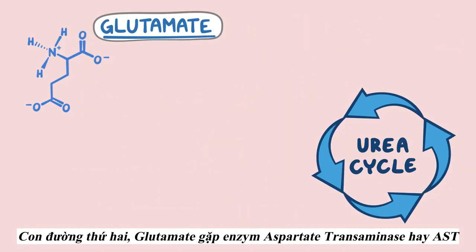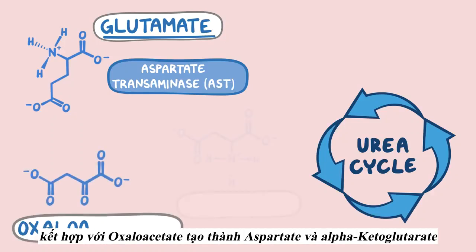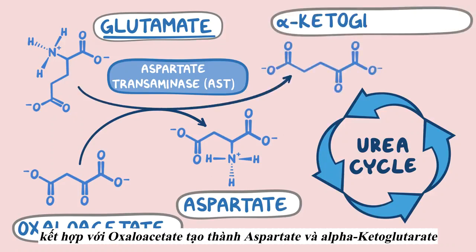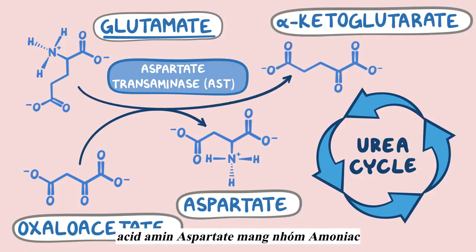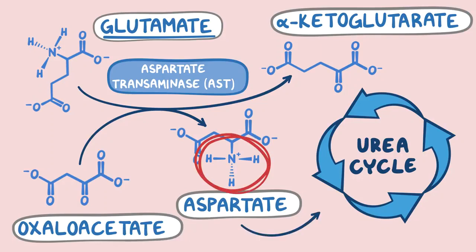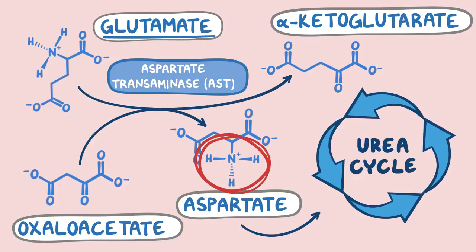The second outcome is for glutamate to encounter the enzyme aspartate transaminase, or AST, and combine with oxaloacetate to form aspartate and alpha-ketoglutarate. The amino acid aspartate is carrying the ammonia group, and aspartate will directly enter the urea cycle. In fact, it's the only amino acid to actually do that.